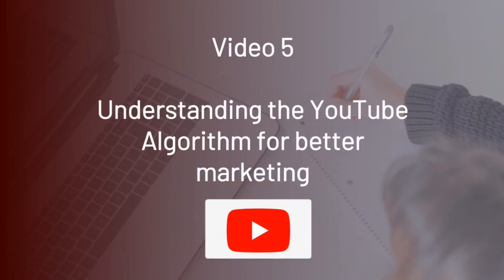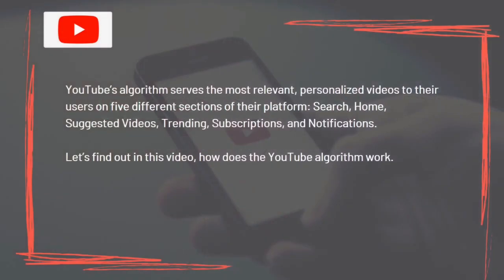YouTube's algorithm serves the most relevant, personalized videos to users on five different sections of their platform: Search, Home, Suggested Videos, Trending, Subscriptions, and Notifications. Let's find out how the YouTube algorithm works.